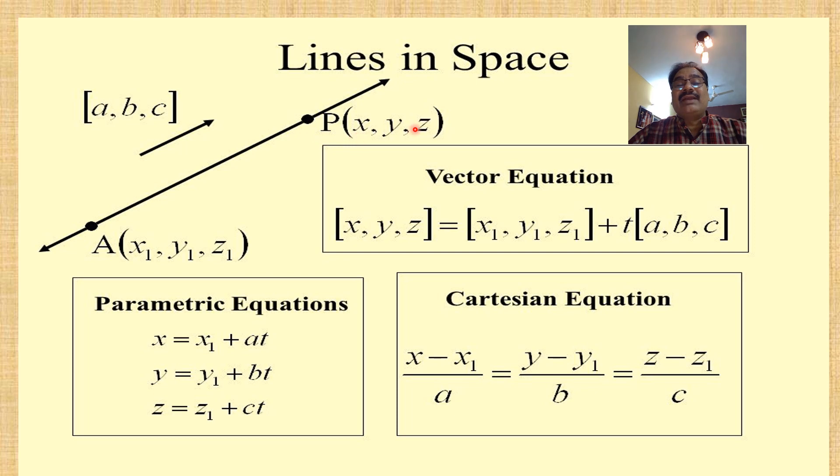The vector form is r = a + tb. The position vector can be written as (x₁, y₁, z₁) + t(a, b, c). We have now seen the parametric equation and the Cartesian equation. These are the equations of a line in space.